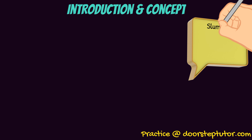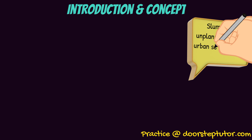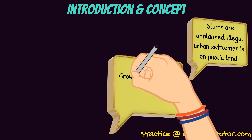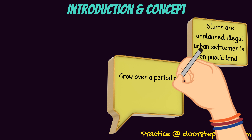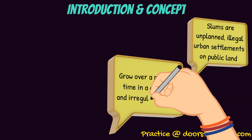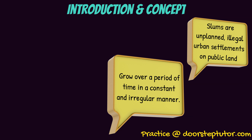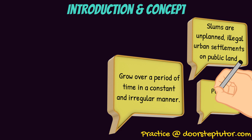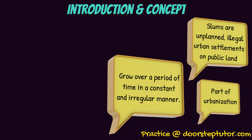When slums are developed, they are not planned — it is unplanned and it is illegal. It is an urban settlement on public land. They grow over a period of time and they grow in a constant but irregular manner. They grow constantly because they are a part of the urban settlement.